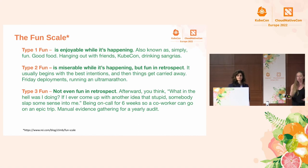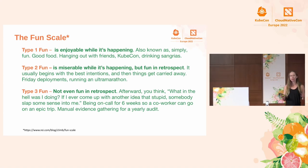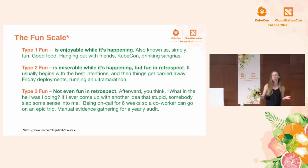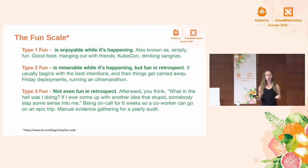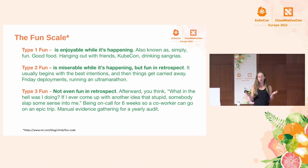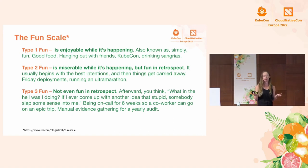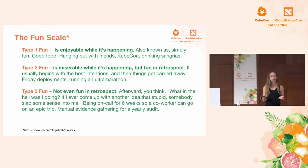Type one fun is like hanging out with friends, going to KubeCon, drinking sangrias. Type two fun is miserable while it's happening but fun in retrospect. This type usually begins with the best intentions but things get carried away — like Friday deployments or doing crazy ultra marathons. Type three fun is just miserable when it's happening and not even fun in retrospect — like being on call for six weeks while a co-worker goes on an epic trip, or manual evidence gathering for your yearly audit.